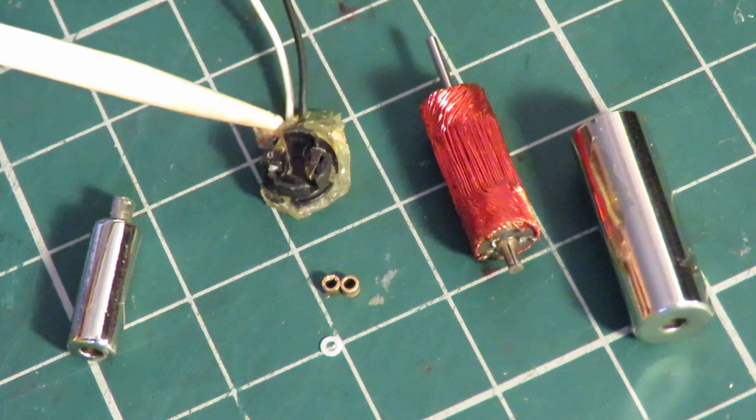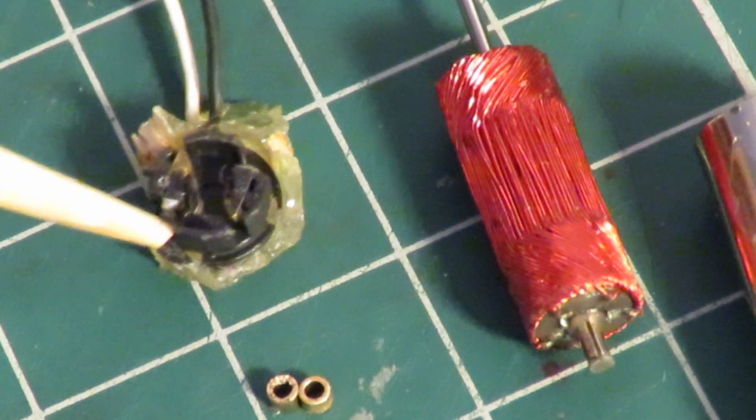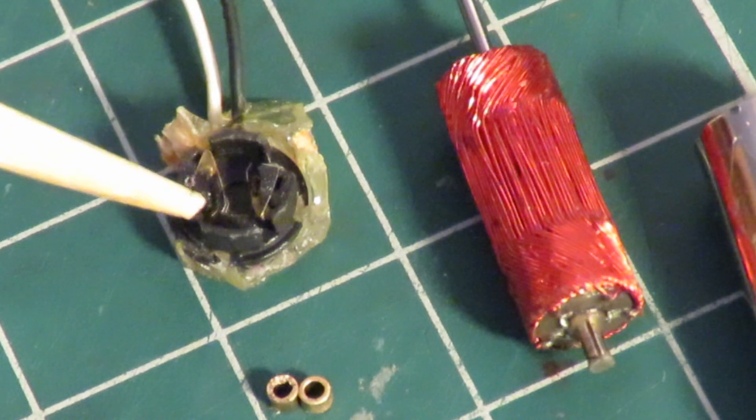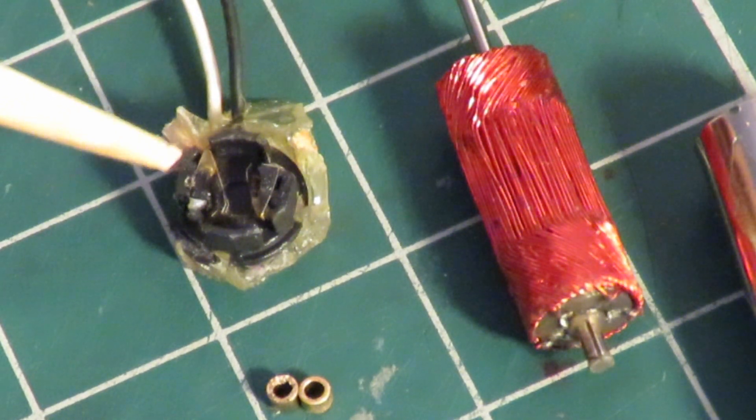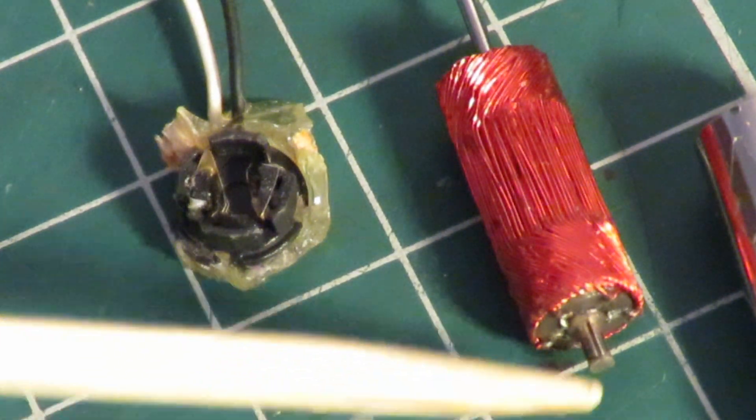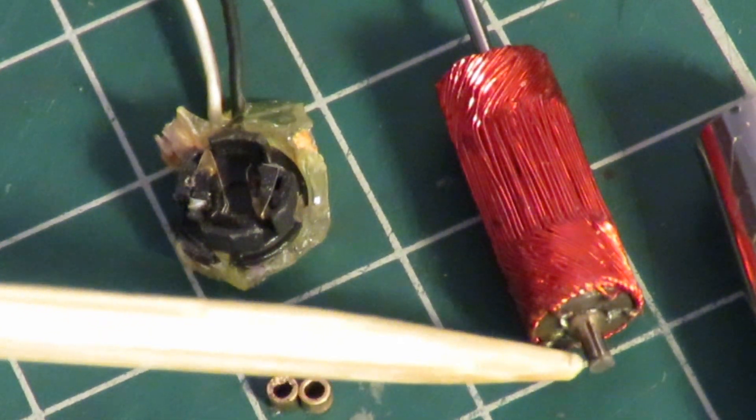I don't know how clearly we can see them but they're made up of I think it's about three little fingers on each side. Very thin springy probably brass something like that, that would make contact with the commutator there.